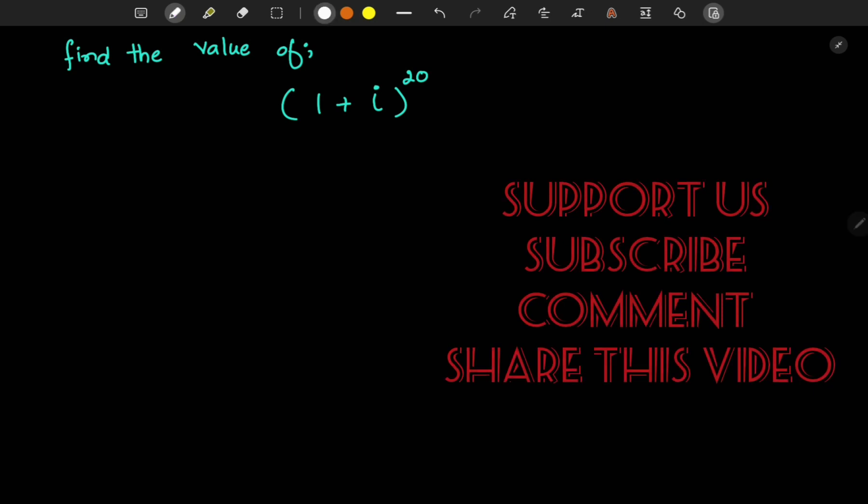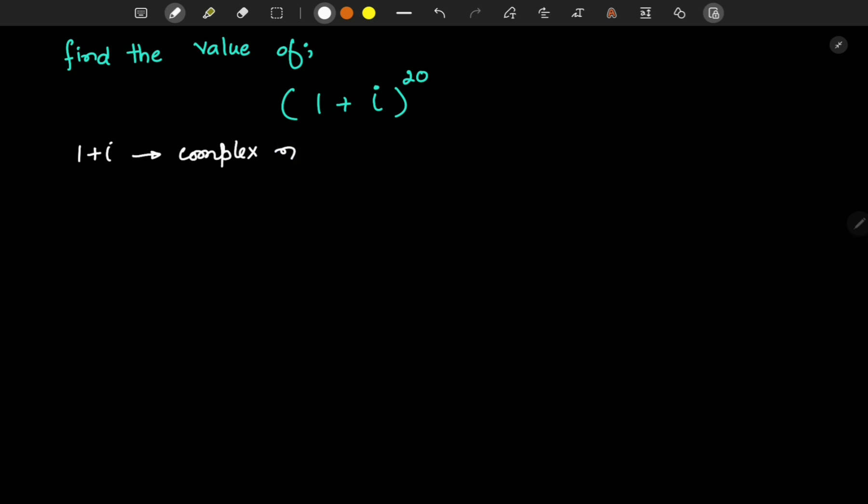For this question, we have 1 + i inside the parenthesis, which is a complex number. We know from Euler's identity that e^(ix) = cos(x) + i·sin(x). For any value of x, the real part cos(x) and imaginary part sin(x) will never simultaneously equal 1.